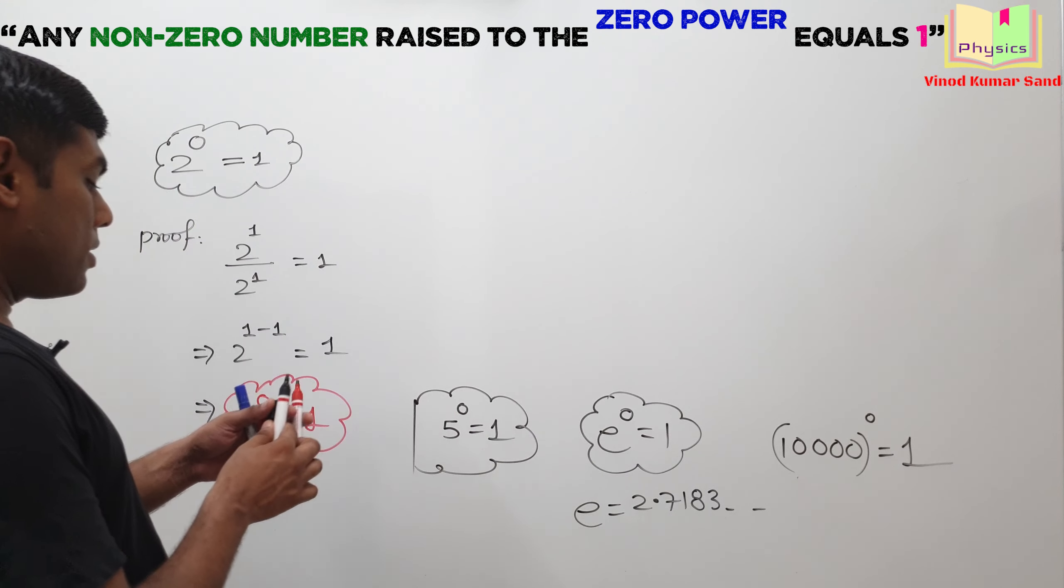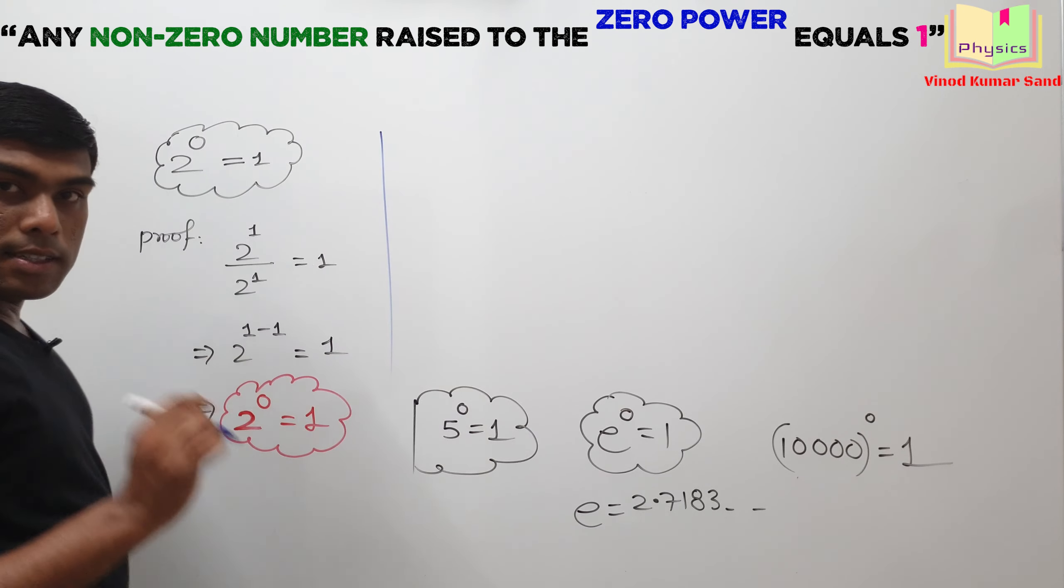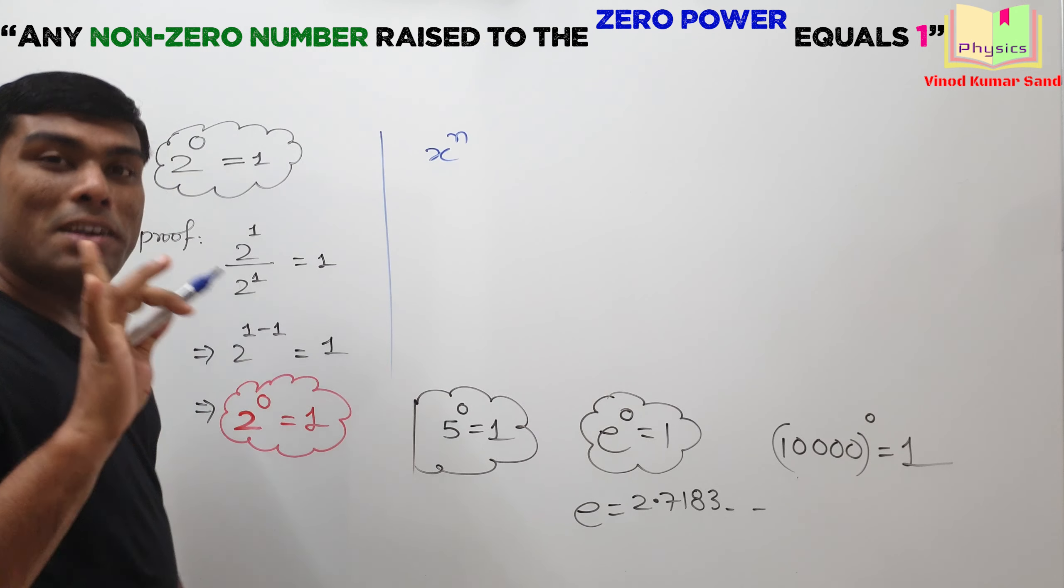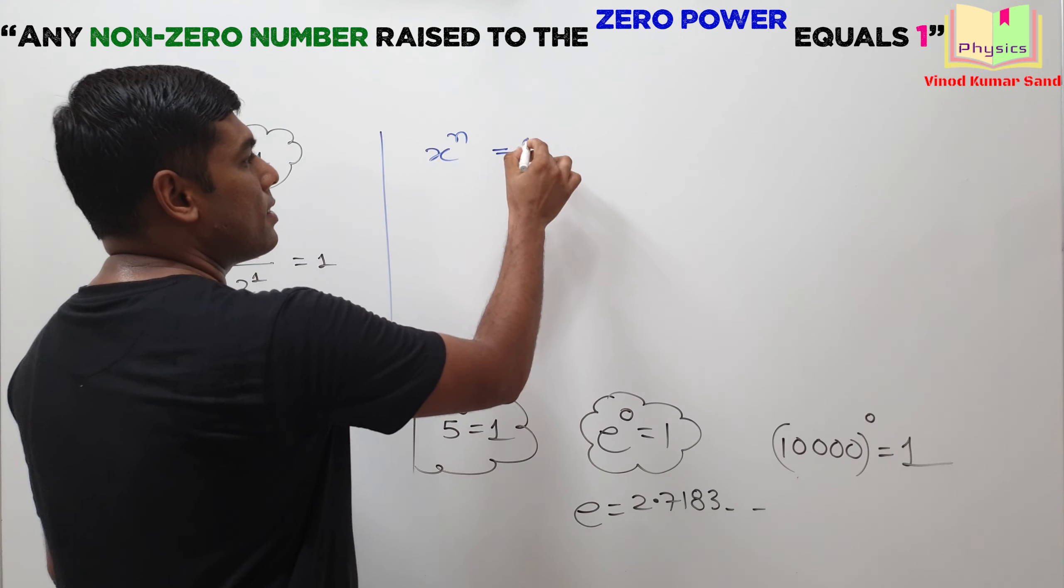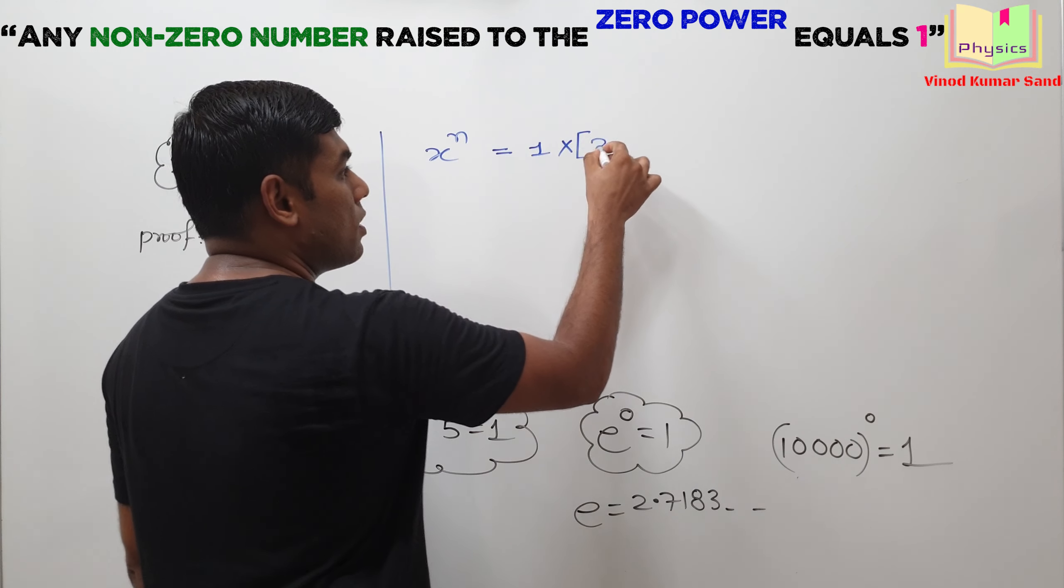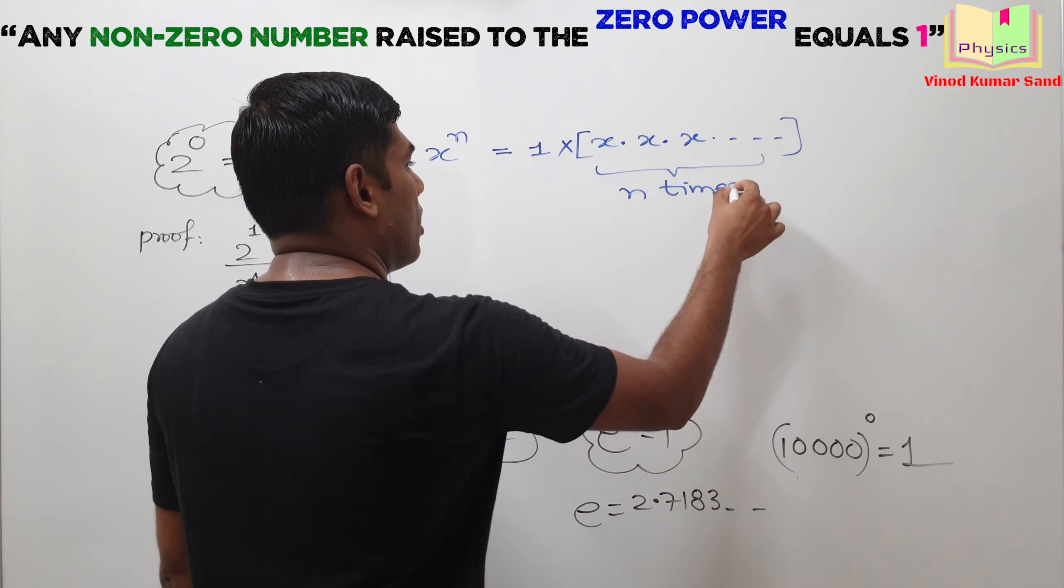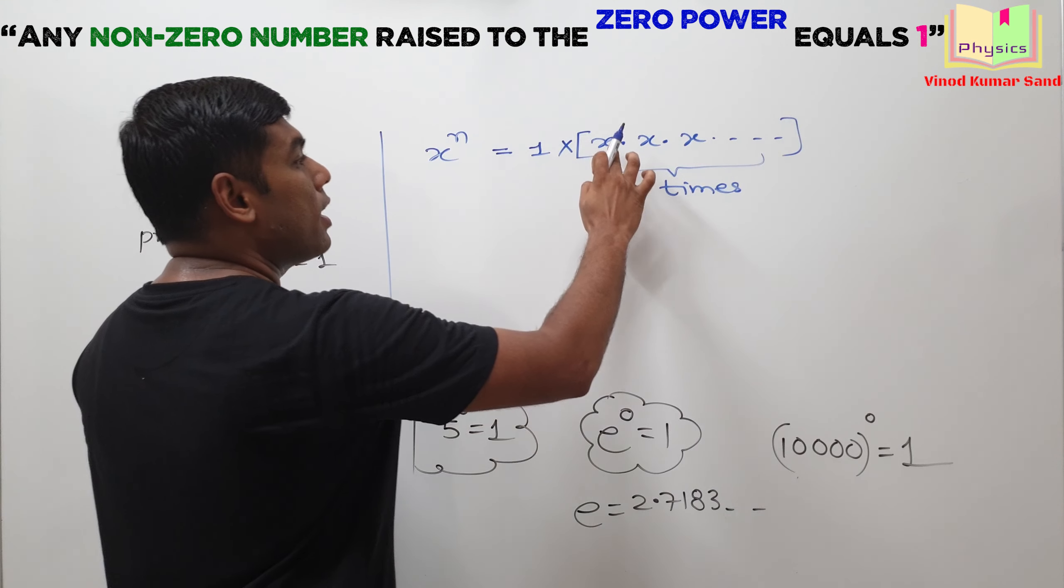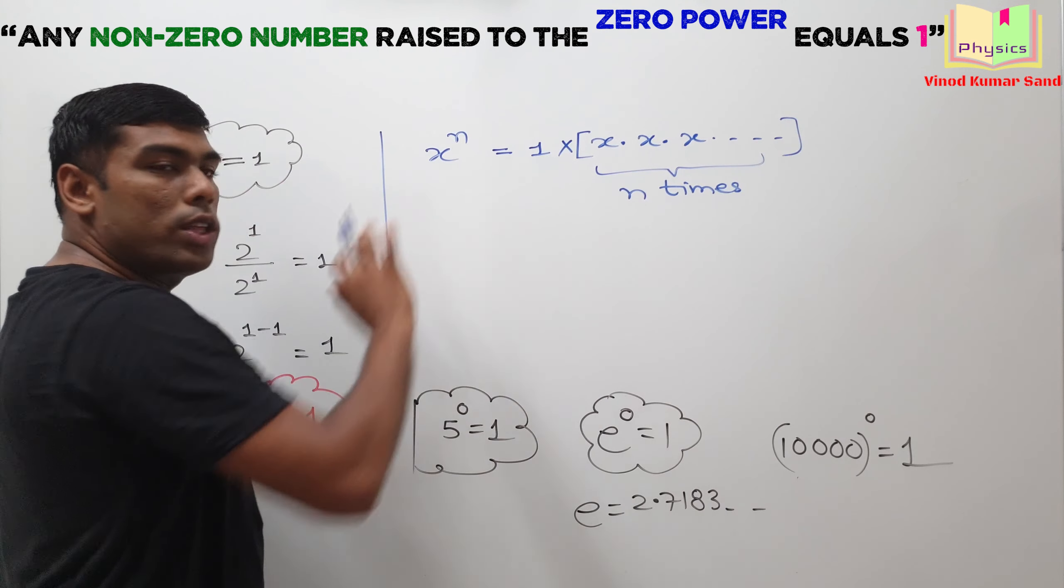Now, this thing can be generalized. Suppose somewhere we find x to power n. Mathematically, it means that x is multiplied n times with 1. I will repeat it. x to power n actually means x is multiplied n times with 1.